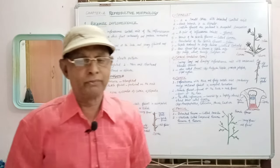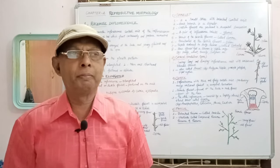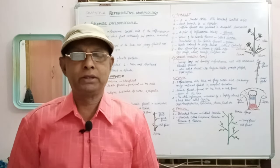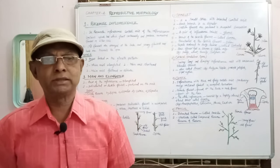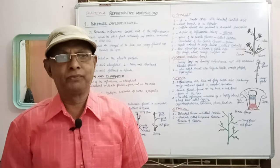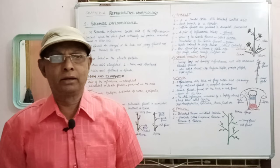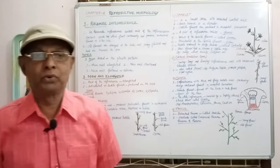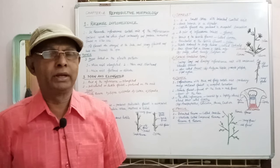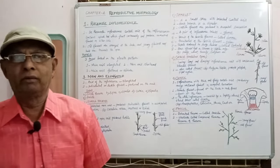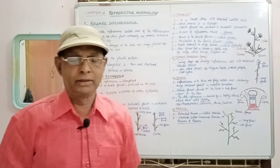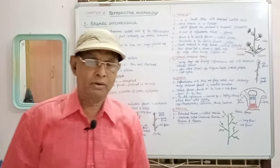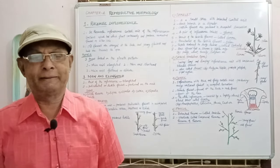The opening of the flower is centripetal because the old flowers situated at the bottom of the inflorescence axis will open first, and the very young flowers and buds at the tip will open later. Such a type of opening of the flower is called centripetal.